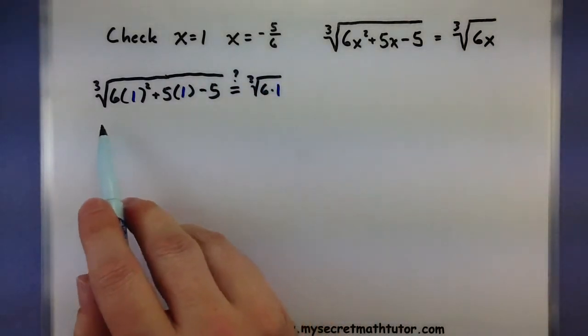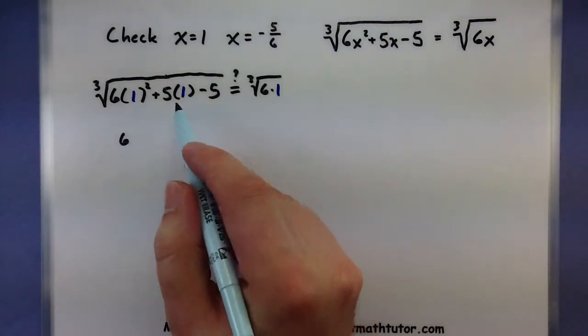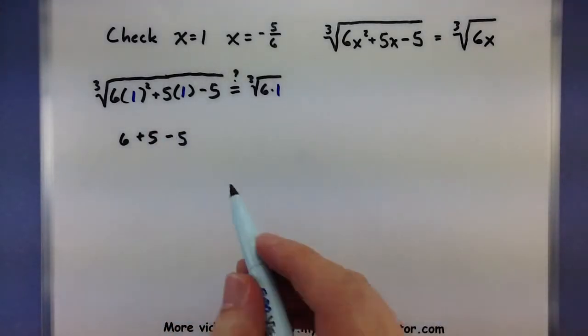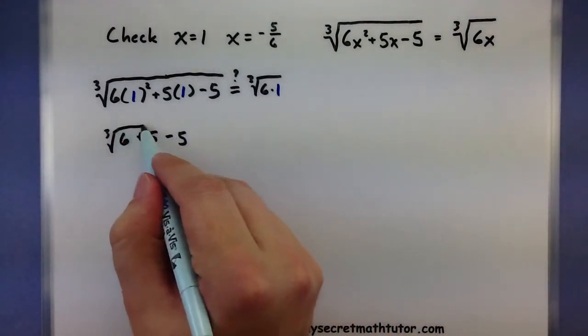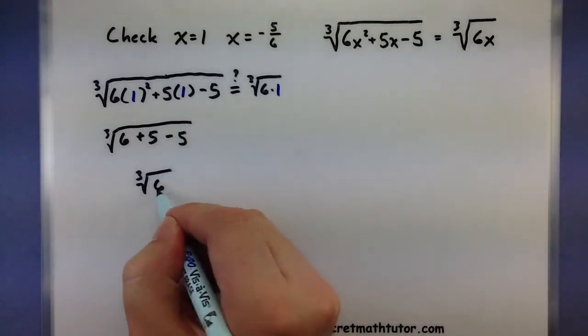All right, carefully crunching things down here. So 1 squared would be 1 times 6 would be 6. 1 times 5 would be 5. Then I have a minus 5. So plus 5 minus 5, I get just the cubed root of 6.